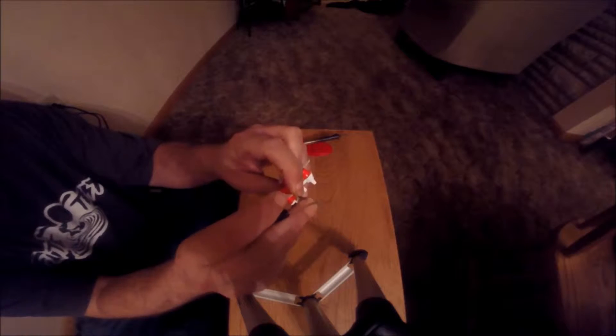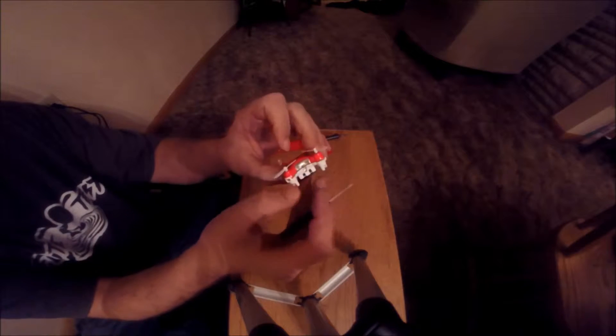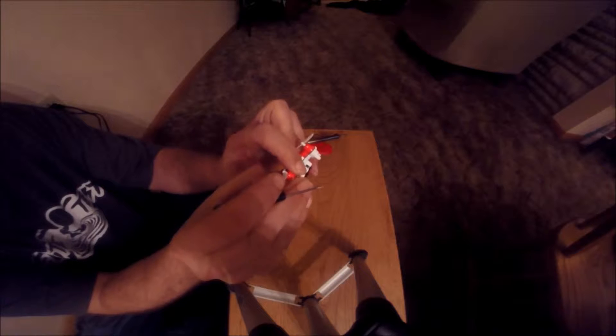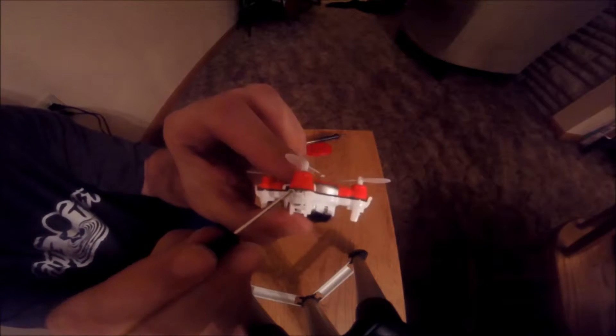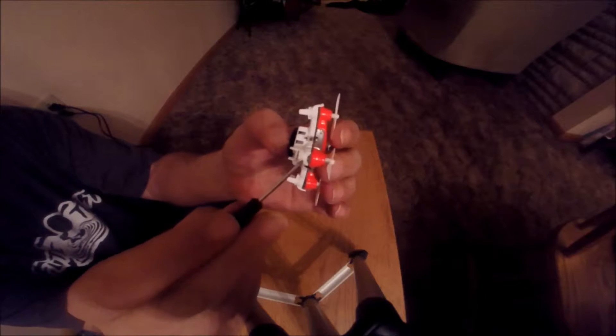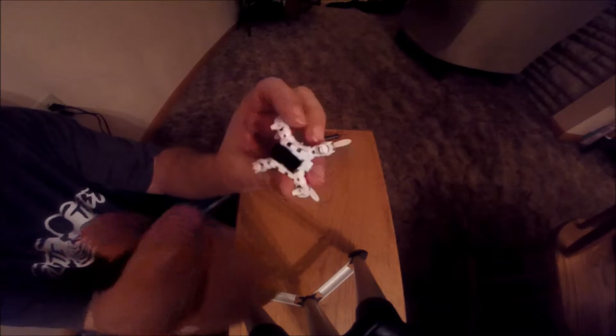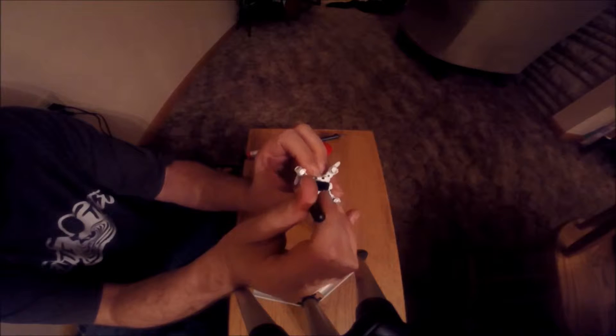The first thing we have to do is remove the tabs holding the pieces together. You'll see they're very tiny and you want to be very careful. I broke mine right here and they do snap off easily. It doesn't stop the quad from running, but it is kind of a problem.